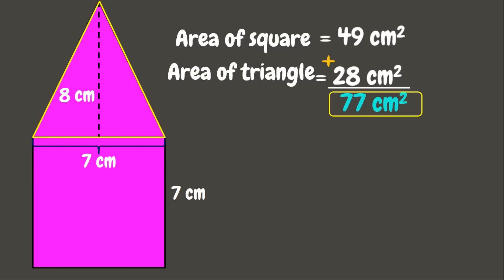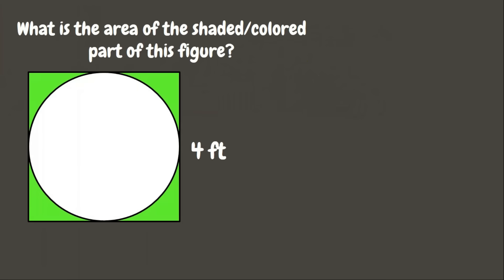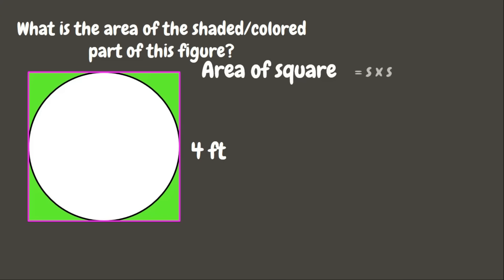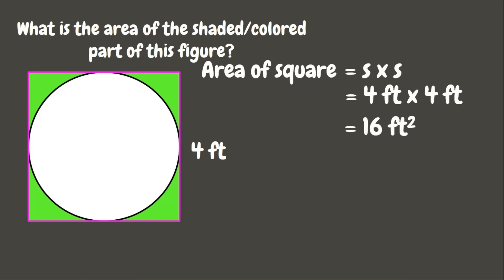Awesome! Now let's move on to our next example. This time we need to find the area of the shaded or colored part of a figure. The figure is already separated into two shapes: a circle inside a square. Let's first get the area of the square: 4 feet times 4 feet equals 16 square feet.